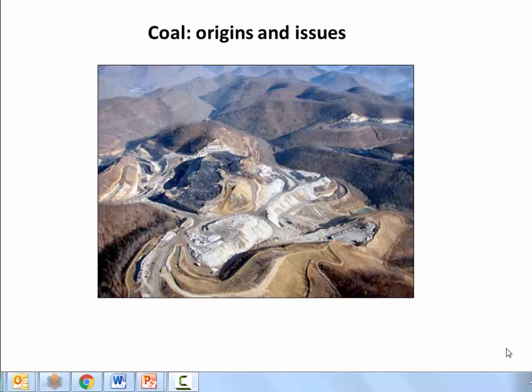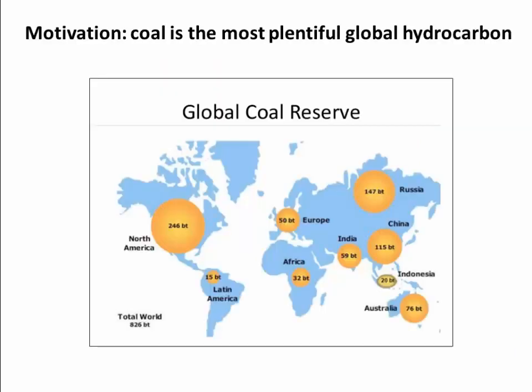Hi, and welcome to our video about coal, called Origins and Issues. Coal is really relevant because it's one of the most plentiful, cheap, and widely available hydrocarbons in the world. We have a huge supply of it in North America — 246 billion tons — as do China and Russia, so we could continue to power ourselves on coal for hundreds of years. Of course, coal is a very dirty and inefficient fuel, so hopefully we won't do that, but it's at least worth understanding how coal evolves and why it's so plentiful.